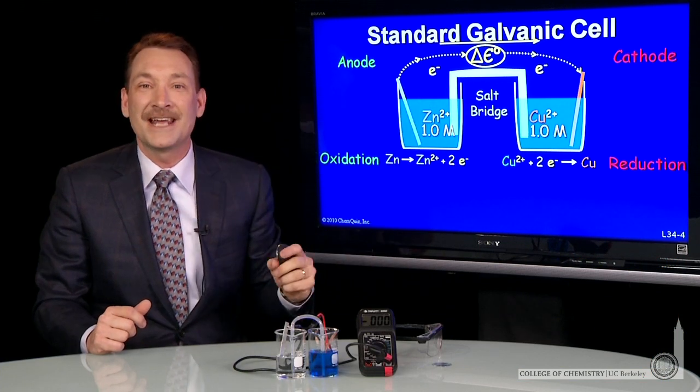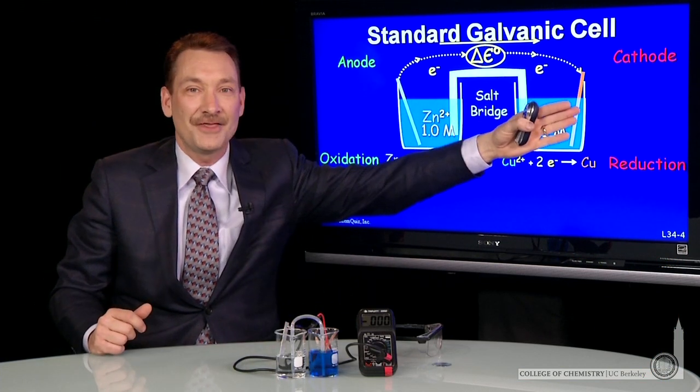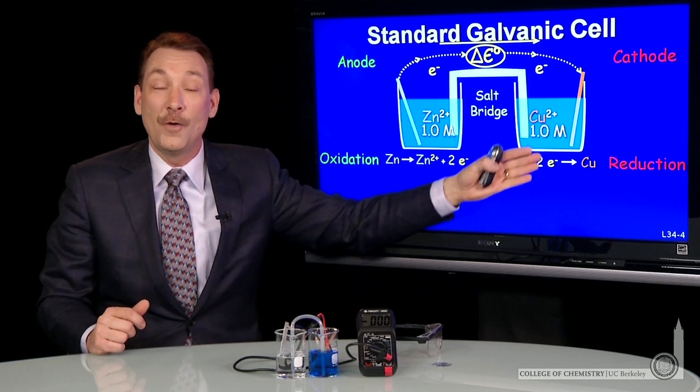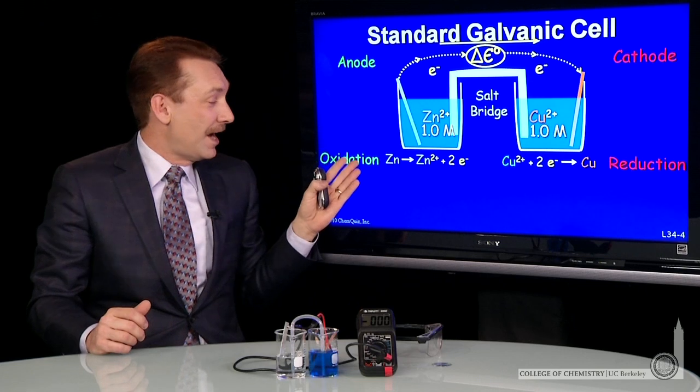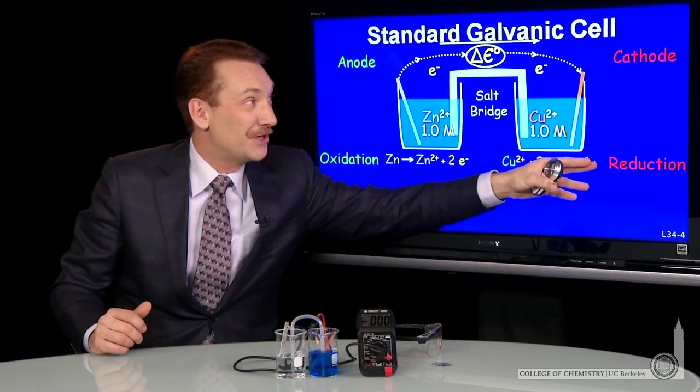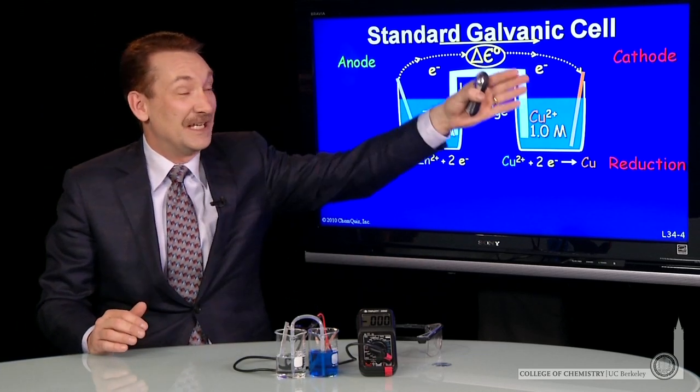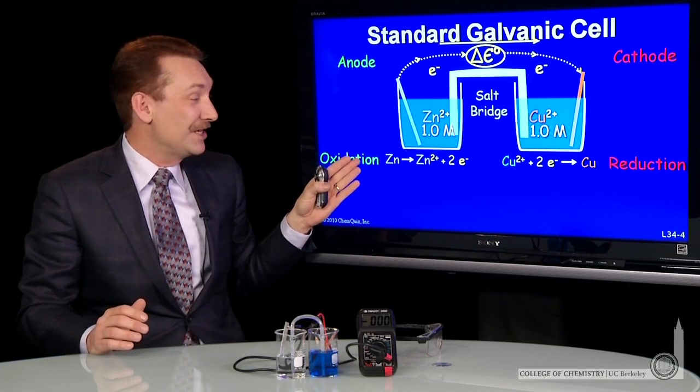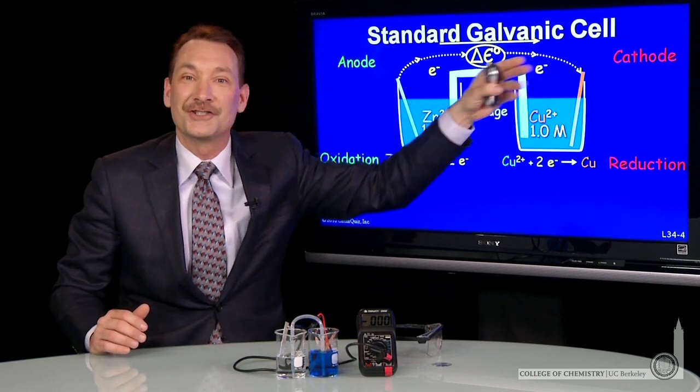This setup I have here is called a standard galvanic cell: an anode and a cathode, an electron flow between them. One way that I remember this is oxidation and anode both start with a vowel, and reduction and cathode both start with a consonant. So that helps me keep straight that oxidation occurs at the anode in a galvanic cell, and the reduction occurs at the cathode.